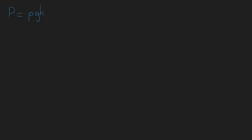So what do each of these variables represent? It's really quite simple. P is pressure. Rho is density. G is the gravitational constant — gravity — which for the purposes of the MCAT is 10. And then H is the height.